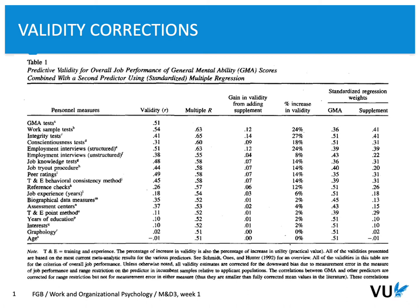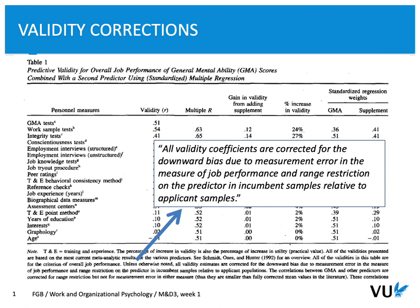Using this final set of slides, I would like to explain some important aspects of validity corrections. As you see here, this table indicates validity of different measures that were used to predict work performance. In the note of the table, you can see brief information that all validity coefficients are corrected for specific bias that can change conclusions regarding predictive validity of specific measures.